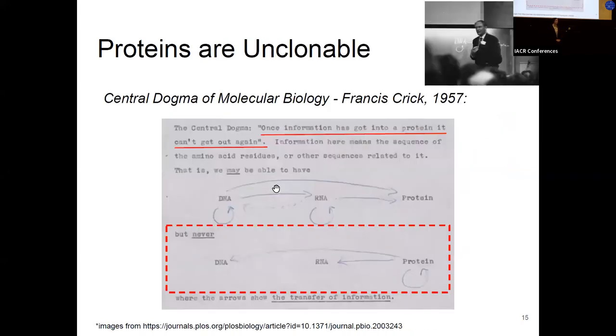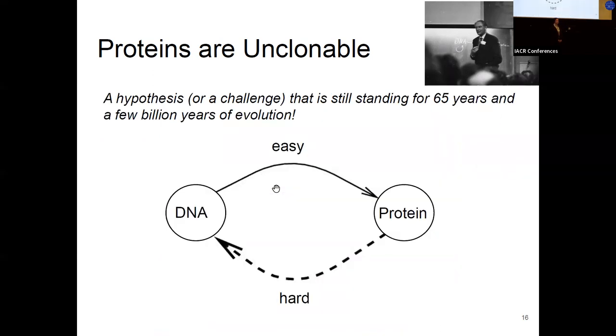First of all, proteins are unclonable. The central dogma of molecular biology states that once information has got into a protein, it cannot get out again. Meaning that given a protein sample, you cannot replicate it and you cannot get the genetic information back. This challenge is still standing for 65 years and even a few billion years of evolution. And to us cryptographers, this is just a biochemical one-way function. And we know what to do with hardness assumptions. We turn the hard lemons into lemonade, as I will show you shortly.